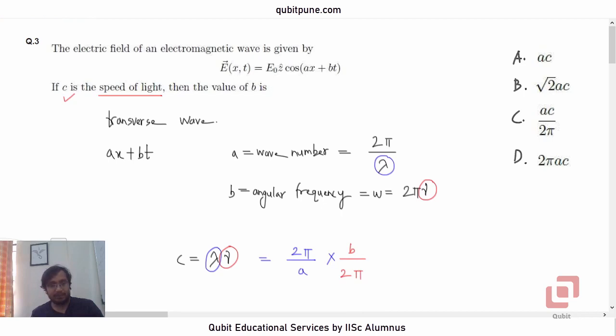2π and 2π will get cancelled. c will be b upon a, or b will be equal to a into c. b will be equal to a into c. Correct option is a.